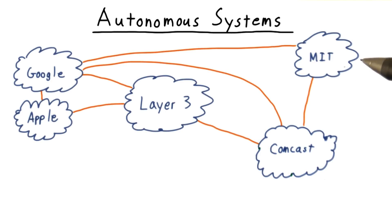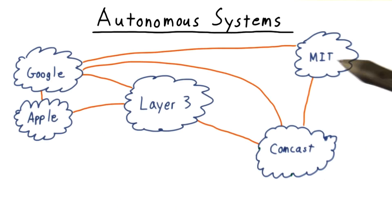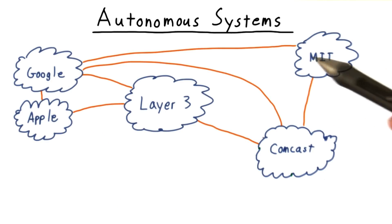Examples of these autonomous systems, or ASs for short, include Google, MIT, Georgia Tech, Comcast, and so forth.